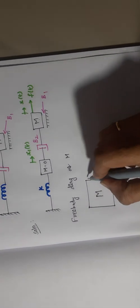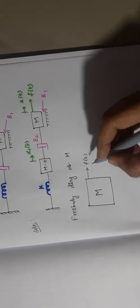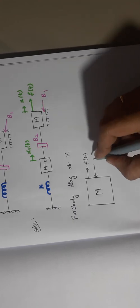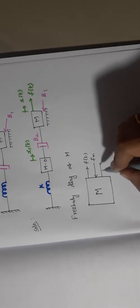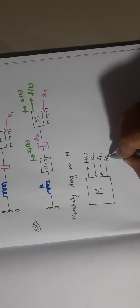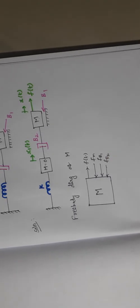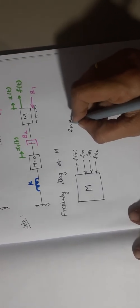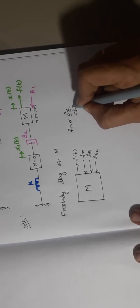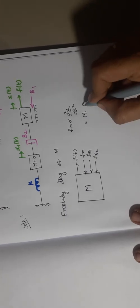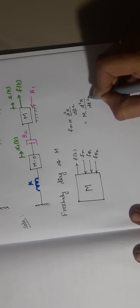First I am writing the applied force. The applied force is F(t) and the opposing force — there will be an opposing force provided by this mass M. I am writing this one as Fm, and the second opposing force is Fb1, and the third opposing force is Fb2. Now I am going to write the force balance equation. Fm is directly proportional to d²x/dt², which is equal to M into d²x/dt².